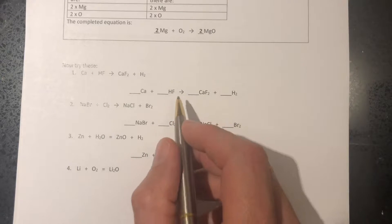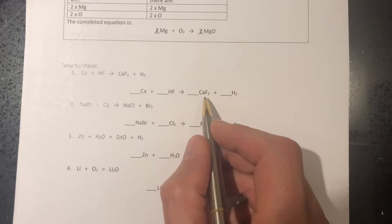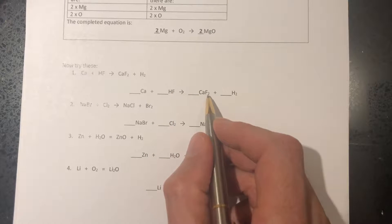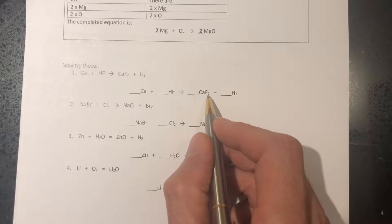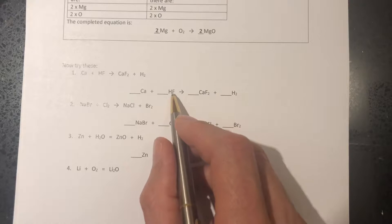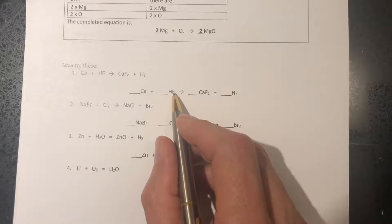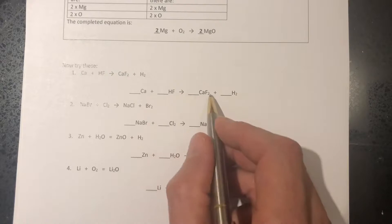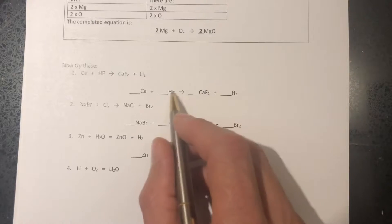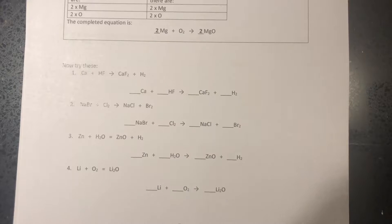The second rule: you are not allowed to mess with little numbers — the subscripts. So this F₂ here, it might be nice to change that F to put a little 2 after it, and it would make the fluorines balance, but you can't do that. You're not allowed to mess with little numbers.